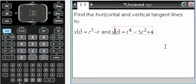I'm going to show you how to solve this problem. We want the horizontal and vertical tangent lines to the parametrically defined curve. X of t is t cubed minus t, and y of t is t to the fourth minus 5t squared plus 4.